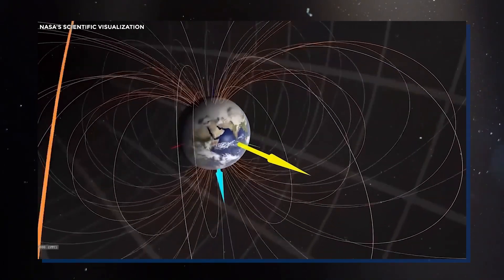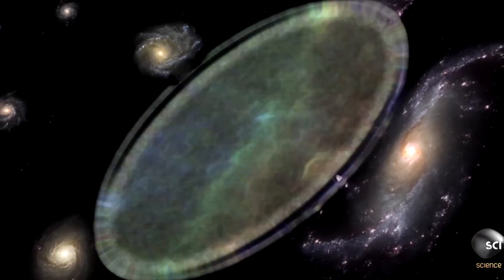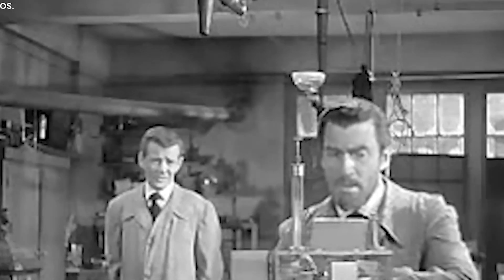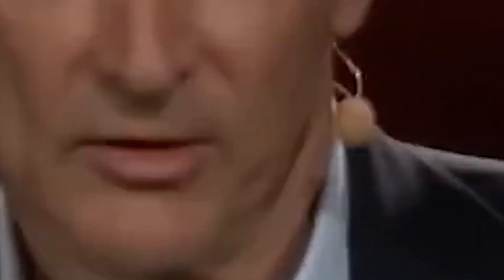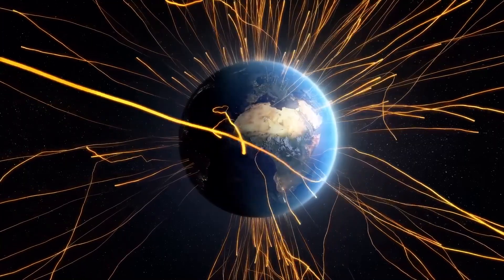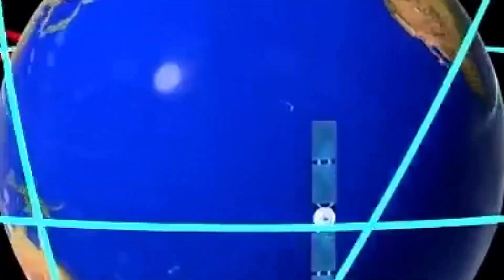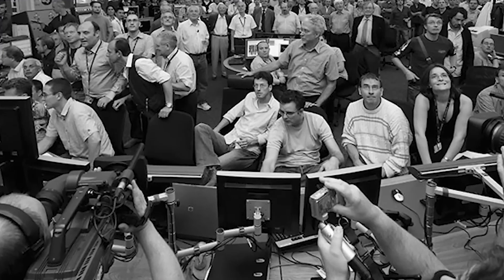Critics argue that the Earth's magnetic field, being influenced by global-scale geodynamic processes, is far beyond the influence of human activity, let alone a single scientific experiment. Given our current understanding of physics, the LHC's energy output is minuscule compared to the enormous energies involved in Earth's geodynamic systems. Therefore, while the connection makes for an intriguing conjecture, it is widely considered unlikely within the scientific community.